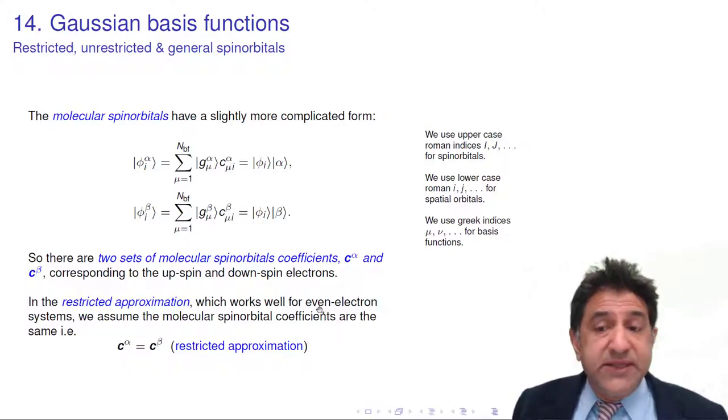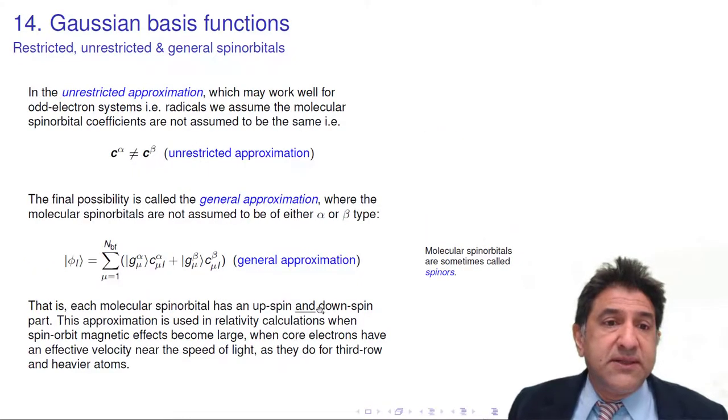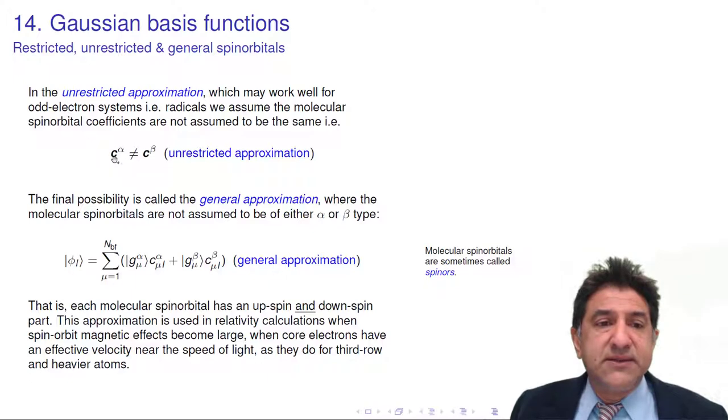With an odd number of electrons, it's different. With an odd number of electrons, or even with an even, it turns out that the alpha coefficients prefer to be different numerically than the beta ones. So this is called unrestricted. Unrestricted because they're not restricted to be the same.